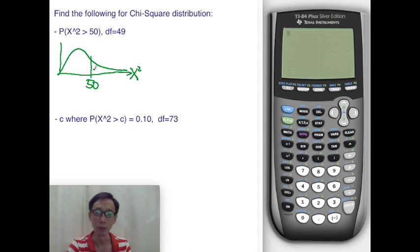This is the area of the graph beyond 50. What's this area?